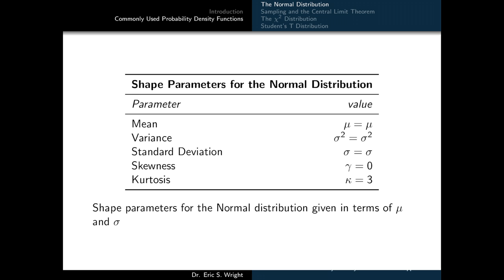Kurtosis is always equal to 3 regardless of the values of mean or standard deviation. For this reason, a kurtosis of 3 is somewhat of a benchmark used for comparing the behavior of other probability distributions to the normal distribution. If we see a distribution with kurtosis greater than 3, we interpret that to mean the outliers are more important than in the normal distribution; if less, the outliers are less prominent — in other words, the tails are either heavier or lighter.